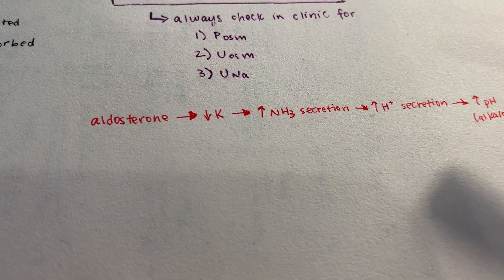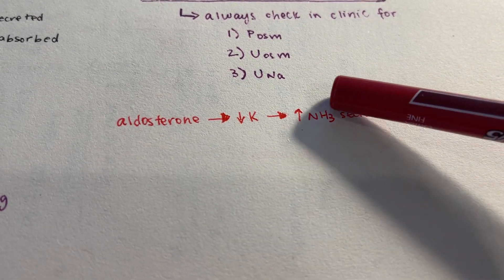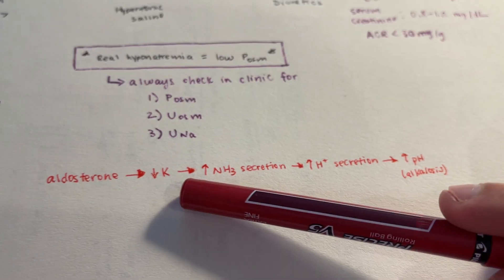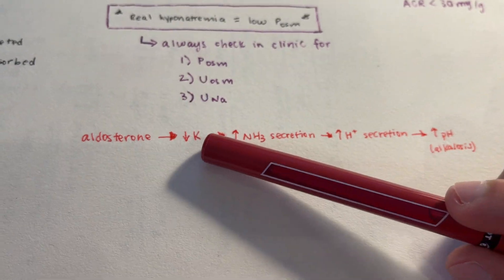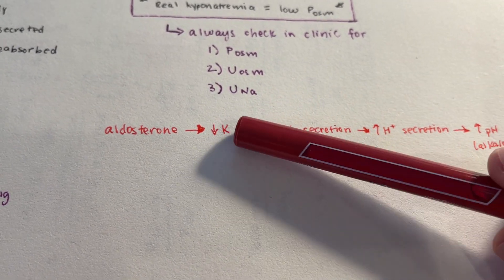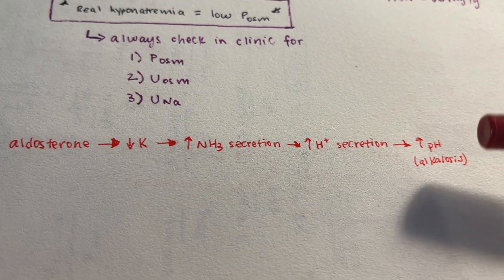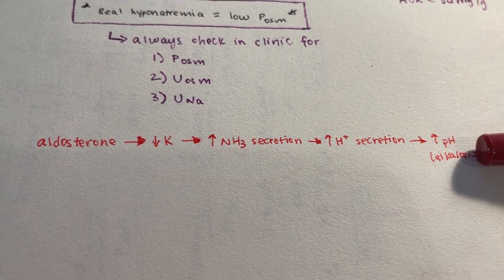So I think a good question to ask is, why does hypokalemia cause alkalosis? So let's go over what exactly is happening to cause hypokalemia, which is decreased potassium, and why that will lead to an increased pH or alkalosis.